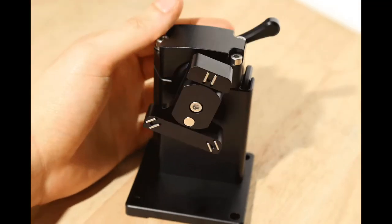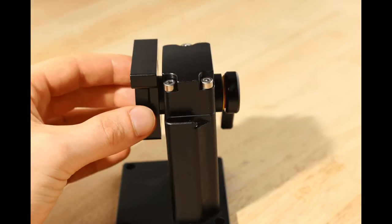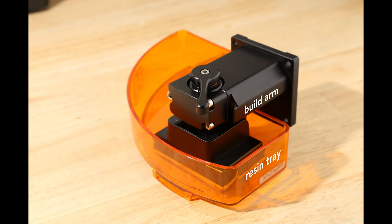Notice that the joint in the build arm can move freely. It can rotate in one dimension and rotate in another and can also slide up and down. This freedom allows the build head to mate with the window and the resin tray when printing.